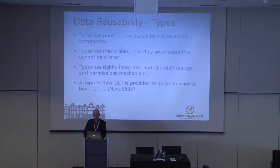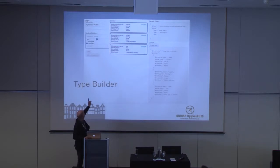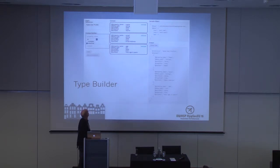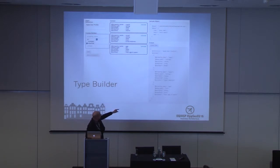Using a web interface, we have a type builder GUI on the platform to make it easier to build types. On the left-hand side you have the name of the type, where you can add individual members. In the centre you have the context — an array of members — defined as relatively simple primitive types: two strings and an int in this case. On the right-hand side you can see a sample object of what it would look like, along with the actual type definition.